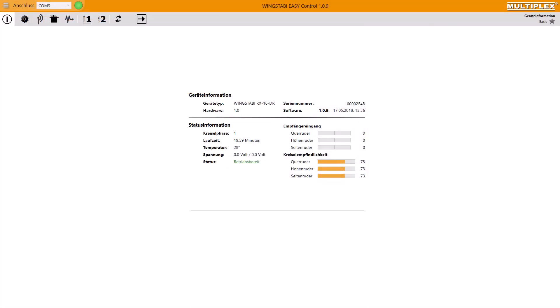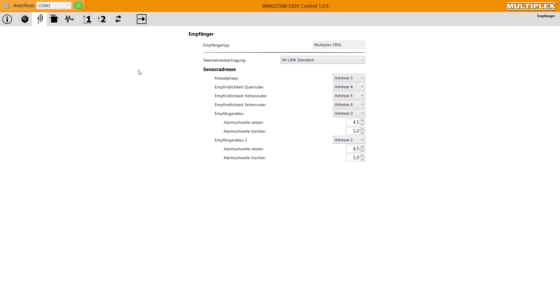Now we go step by step through the single functions of Wing Stubby Easy Control. Let's start with the receiver. In my case I have the standard SRXL receiver type. I can change this. And I have the MLINK standard telemetry. If I want, I could deactivate the telemetry. Here I can also set the different sensor addresses for the different parameters.